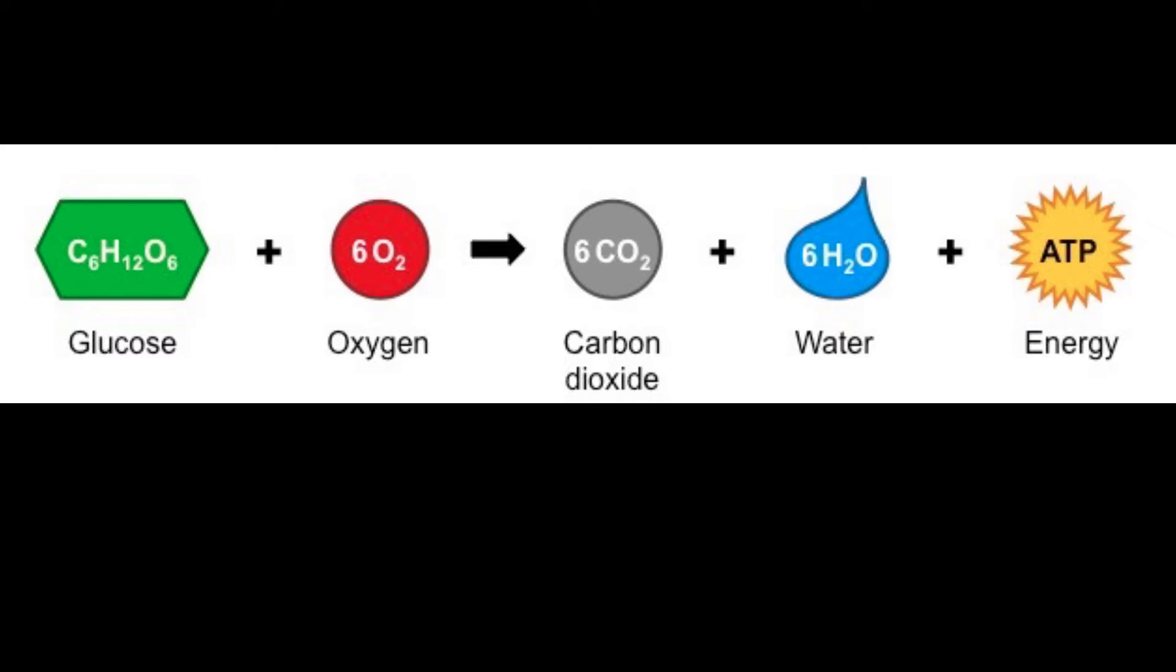To produce ATP, we break open the bonds of glucose or other fuels and release the electrons and the energy they carry and transfer as much of that energy as we can to the ATP molecule.